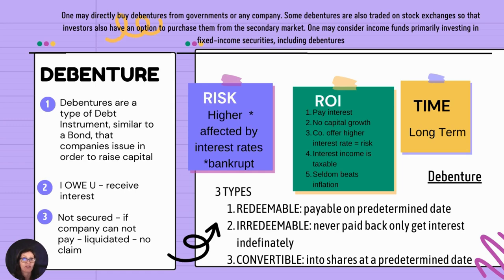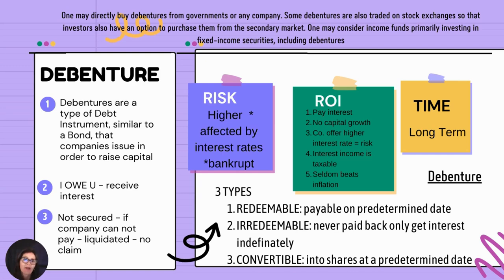There are three types of debentures. The first is redeemable — they are going to pay you on a predetermined date. You've lent them 50,000 rand and they've said that in two years' time on the 30th of August, they're going to pay you back everything they owe you. Irredeemable means they never pay you back — you get interest indefinitely for a period of time that will eventually cover all the costs and then some. Convertible means it can be converted into shares at a predetermined date — the company will pay you interest for a set amount of time and then offer you shares so you can start getting dividends.